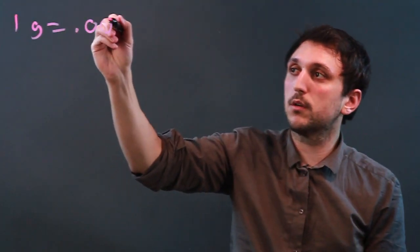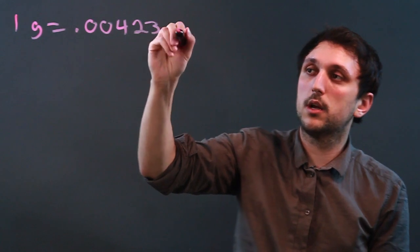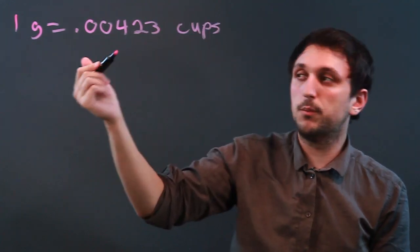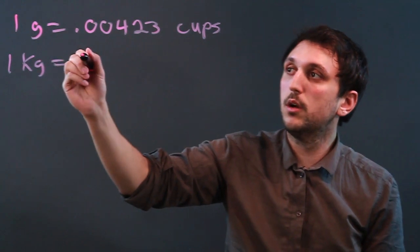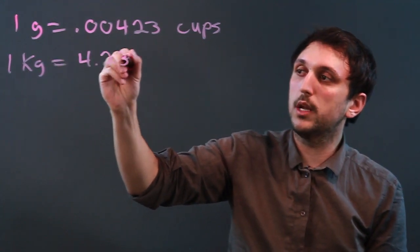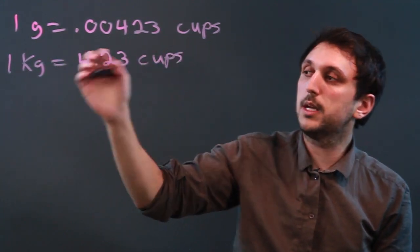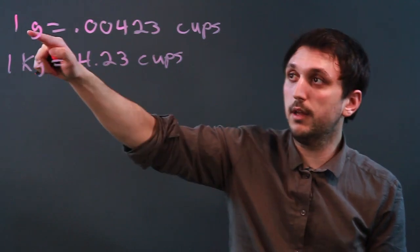However, if we're talking about just water, then 1 gram equals .00423 cups, which would mean that 1 kilogram would equal 4.23 cups because a kilogram is a thousand grams.